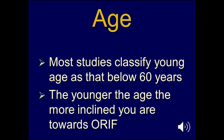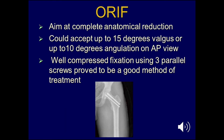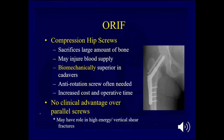Probably the most important factor is age, which dramatically changes management. Most studies classify young age as below 60 years, and the younger the patient, the more inclined you are towards internal fixation. You must aim at complete anatomic reduction, accepting up to 15 degrees valgus or up to 10 degrees angulation on AP view, with well-compressed fixation using three cancellous screws, which has proven to be a very good method. Compression hip screws may be biomechanically superior in cadavers but sacrifice a large amount of bone, may injure the blood supply, often require anti-rotation screws, and entail increased cost and operative time — so they may be reserved for high-energy or vertical shear fractures.